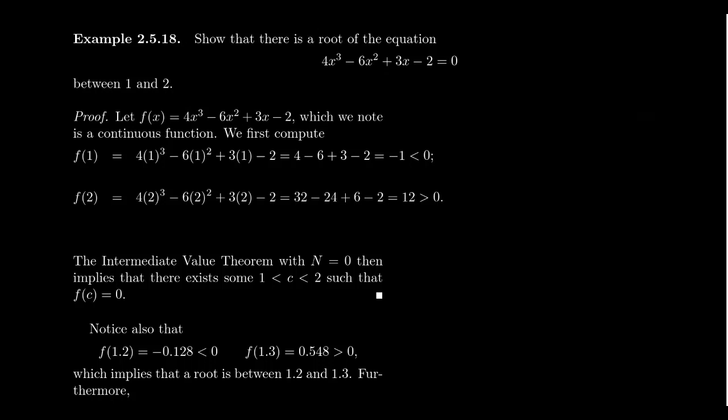We are going to use the Intermediate Value Theorem to show that there is a root to the equation 4x³ - 6x² + 3x - 2 = 0. Now I deliberately chose this polynomial because this is one you're going to have a hard time factoring using techniques you might have learned in a precalculus setting. We're going to show that there's actually a root to this polynomial, a solution to the equation between the numbers 1 and 2. So the first thing to do is first mention what is the function in play here. I'm going to take f(x) to be the left-hand side of this equation.